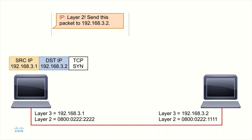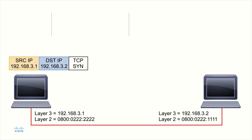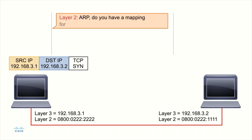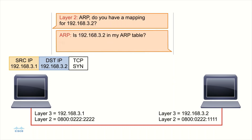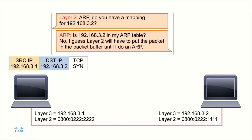The IP protocol has told layer two to send the packet to 192.168.3.2. Before layer two can do this, it needs to make sure it has an ARP cache entry. Layer two asks ARP: do you have a mapping for 192.168.3.2? ARP checks the ARP table and finds that it is not there. So ARP says, layer two is going to have to put the packet in the buffer — kind of in a parking lot — while I perform an ARP request.